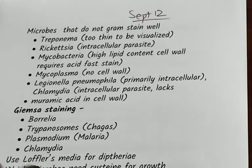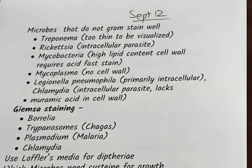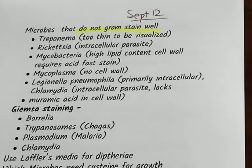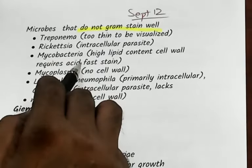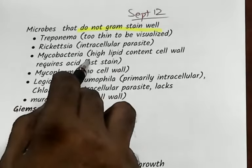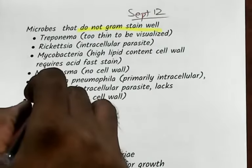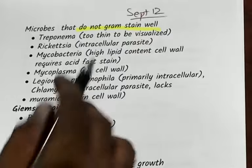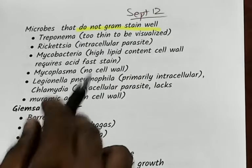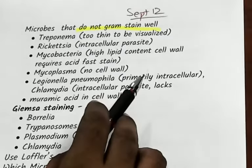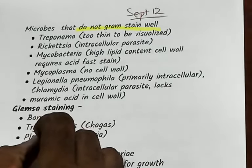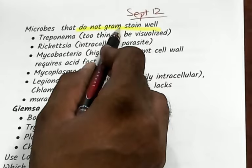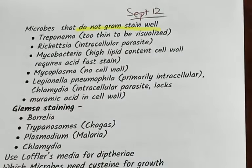Let us quickly master the few microbes that do not stain with the Gram stain. Treponema — two things to be visualized. Rickettsia — it is intracellular, so how can you stain it? Mycobacteria have a very high lipid content that requires acid-fast staining. Mycoplasma is also primarily intracellular. Chlamydia is an intracellular parasite; it lacks muramic acid in the cell wall — that is the reason it doesn't stain with the Gram stain.